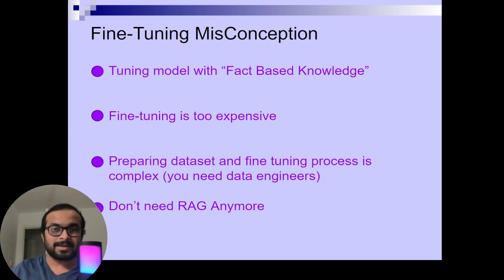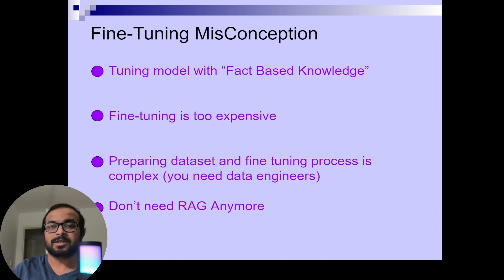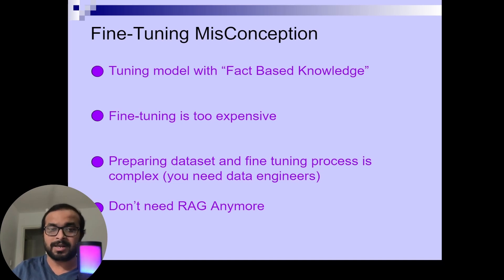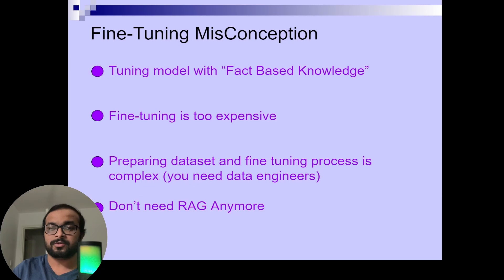For example, if you are making a legal and regulatory application, your legal framework is being changed every time a new law comes in, and regulatory compliance frameworks are being changed regularly. That means your AI application needs to have the latest information, and fine-tuning will not ensure that you will always get the latest information.